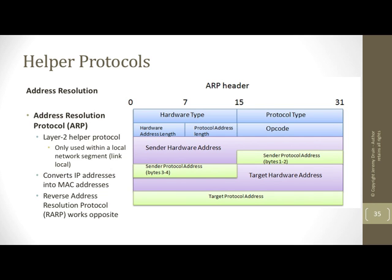The Address Resolution Protocol is a layer 2 helper. It's only used within a local subnet because MAC addresses have no meaning once you cross over into another network, but it's critically important within a network. If you're doing ARP poisoning, this is the protocol you're abusing. That's why if you're going to do sniffing via ARP poisoning, you have to actually be on the same subnet as one of the two systems that are communicating.